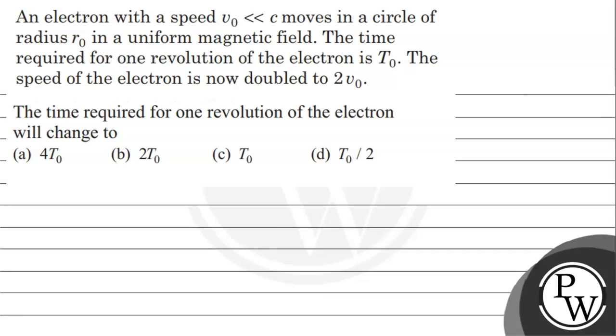Hello, the question says that an electron with a speed v0 << c moves in a circle of radius r0 in a uniform magnetic field. The time required for one revolution of the electron is T0. The speed of the electron is now doubled to 2v0. The time required for one revolution of the electron will change to? Options are 4T0, 2T0, T0, and T0/2.